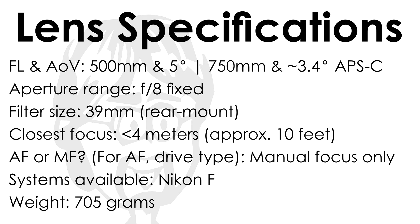The closest focus on this lens is a hair less than 4 meters, which is approximately 10 feet. It is manual focus only, available only in Nikon F mount, and weighs 705 grams, which is largely the metal housing as this lens only has five elements — three of them small and two of them mirrors.